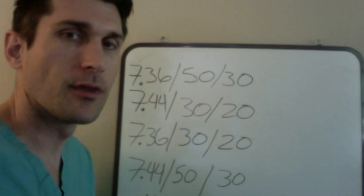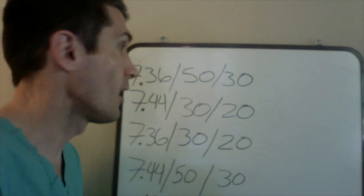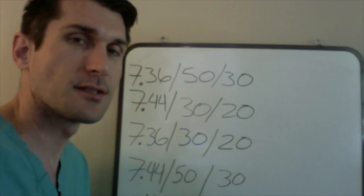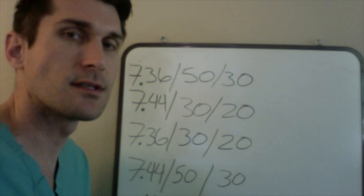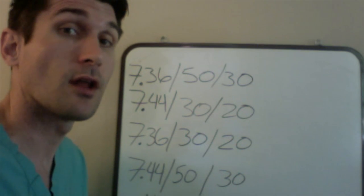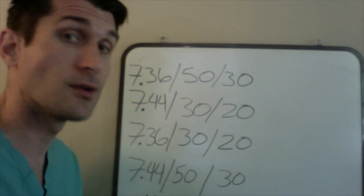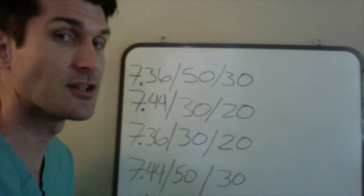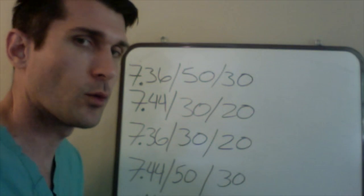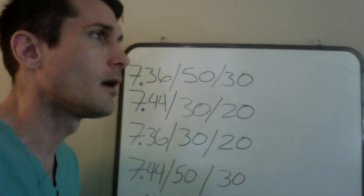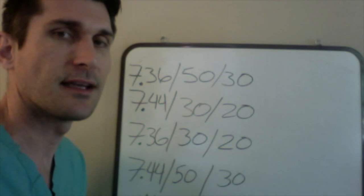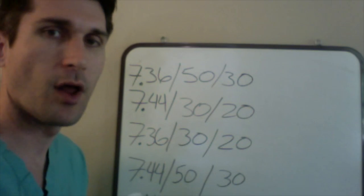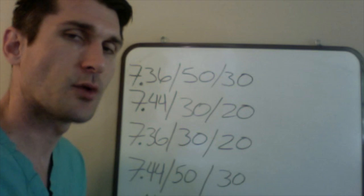Hey gang, Aaron Reid again with NurseMastering.com. In my previous video we talked about respiratory acidosis and alkalosis as well as metabolic acidosis and alkalosis — those are acute situations in which one of these two parameters is deranged. We're going to take it a step further here and look at compensated and uncompensated respiratory acidosis and metabolic alkalosis and all the other different situations.